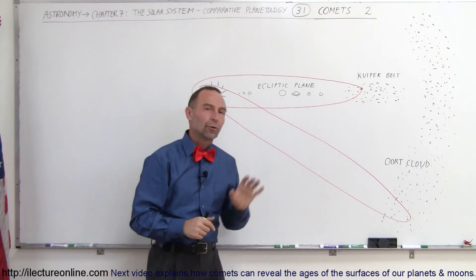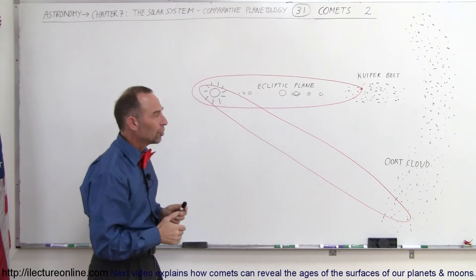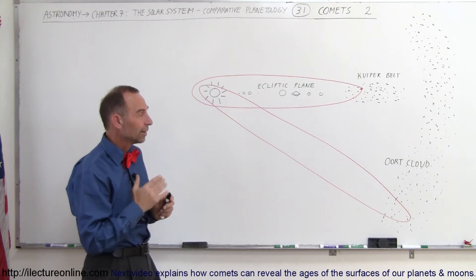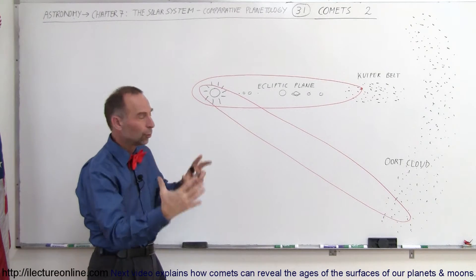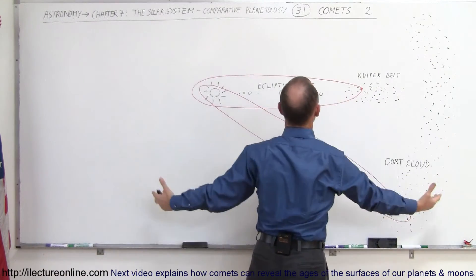But well beyond that, for thousands and thousands of astronomical units, maybe as much as far away as one light year away, we have this spherical region that completely engulfs the Solar System.